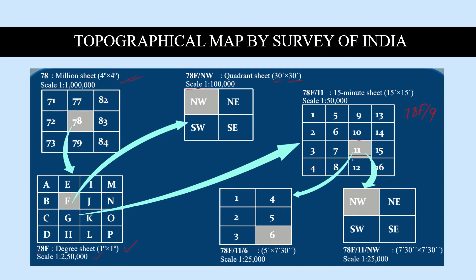When this block or topo sheet is further divided into four parts — northwest, northeast, southeast, southwest — the topo sheet number becomes 78F/11/NW, meaning northwest. The scale value becomes 1:25,000 and the degree value is 7 minutes 30 seconds by 7 minutes 30 seconds, meaning the gap from one side to the other is 7 minutes 30 seconds in both directions.